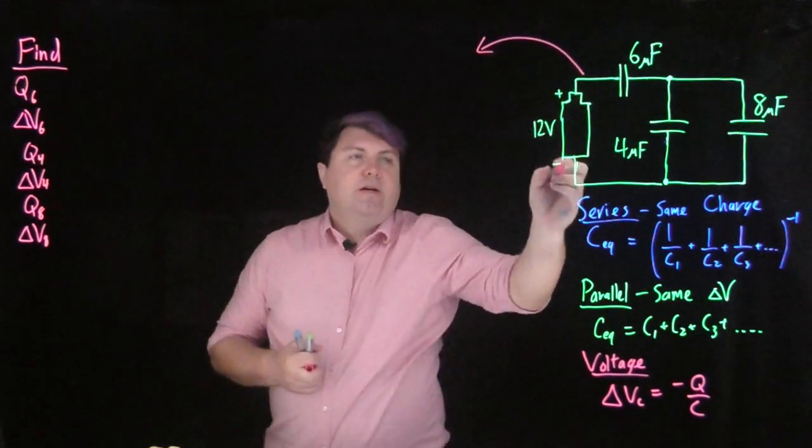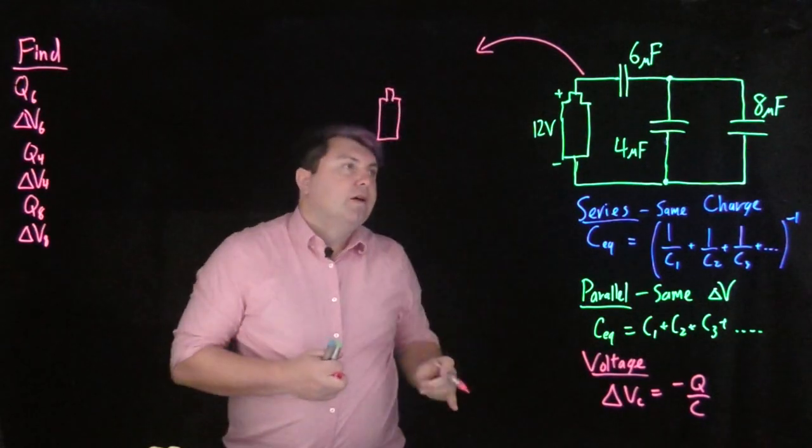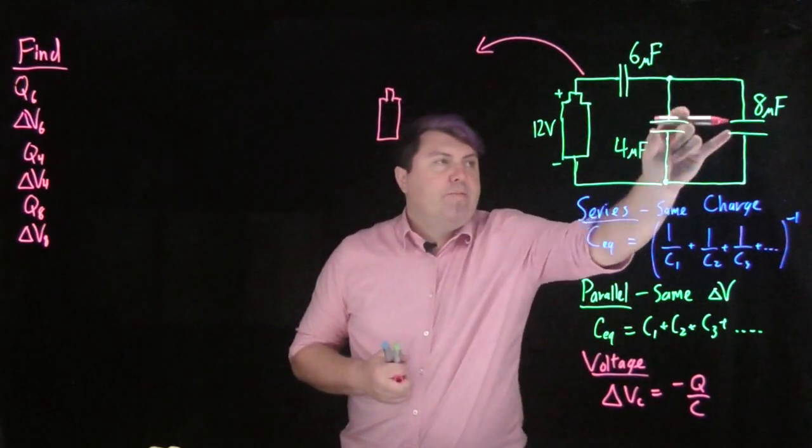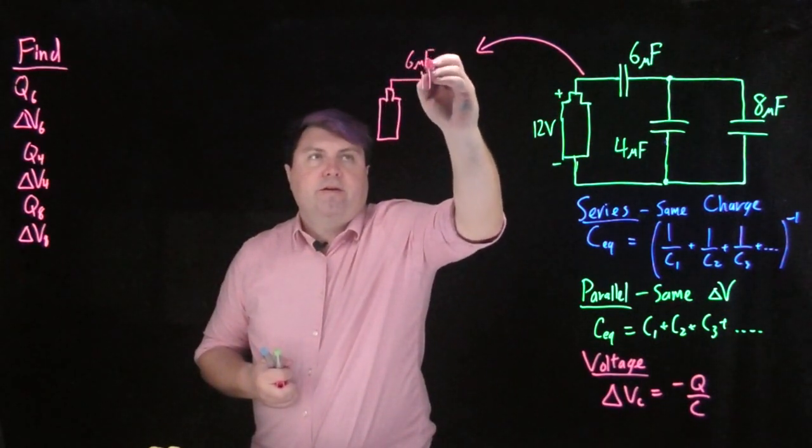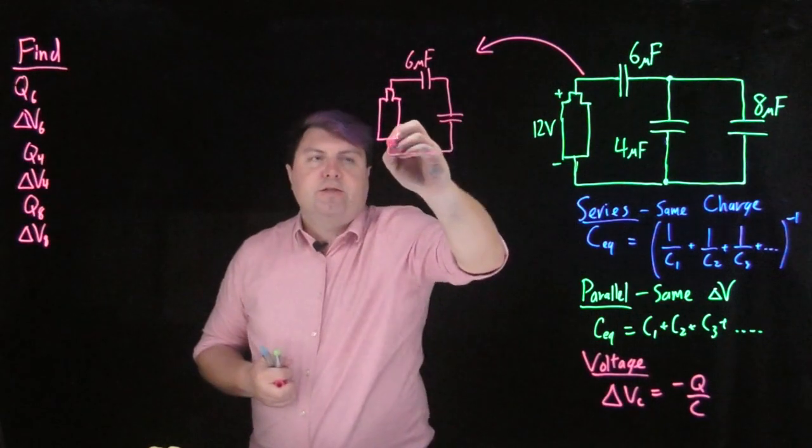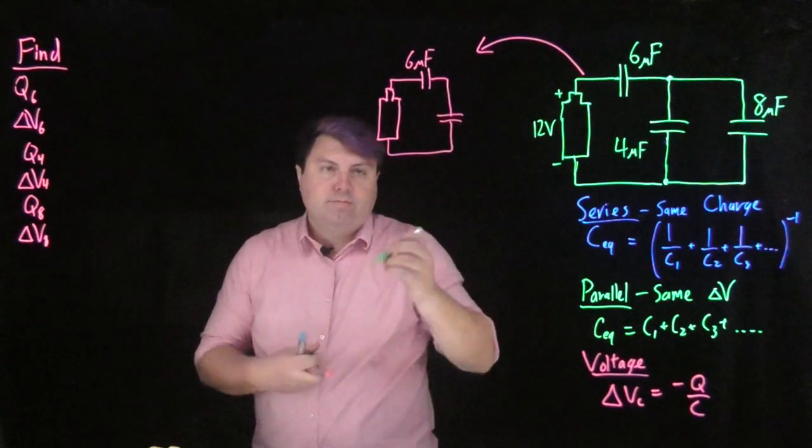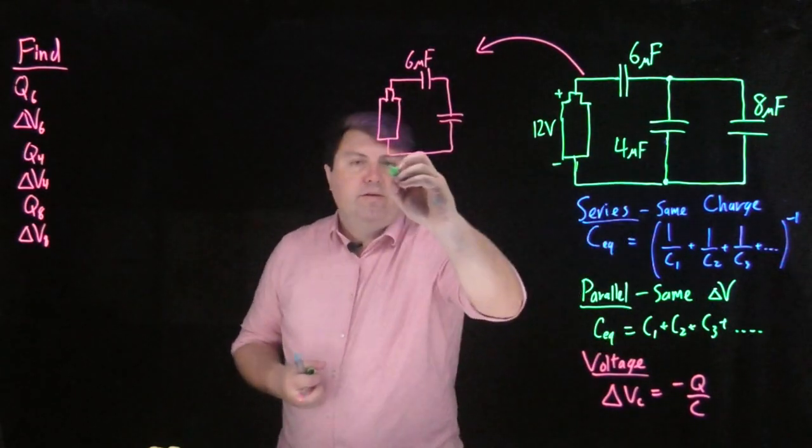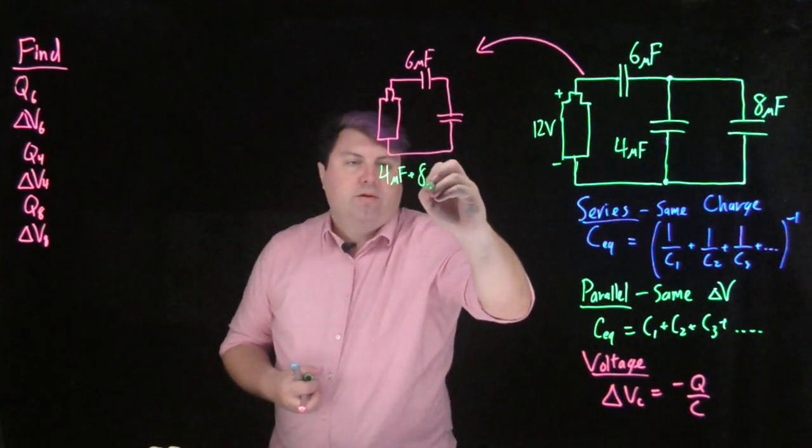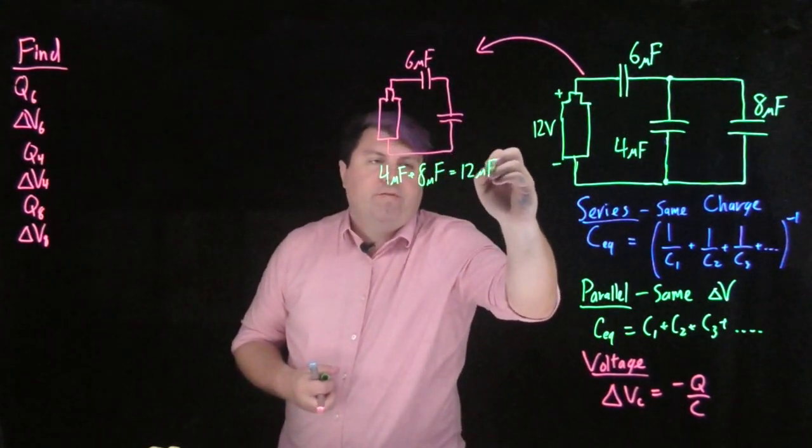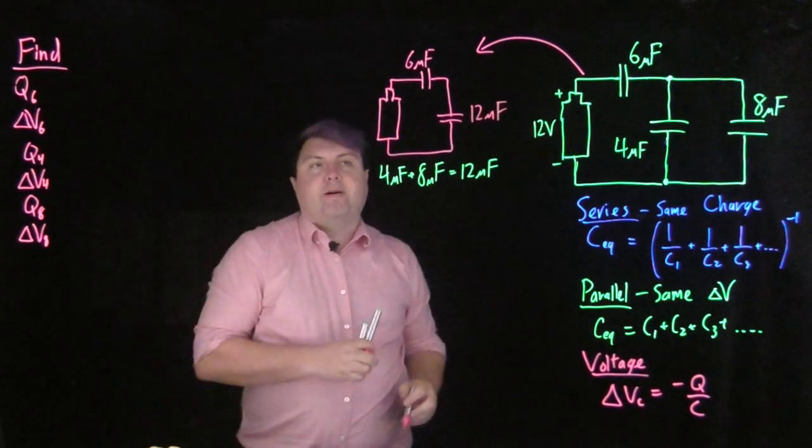So one thing we can do to start is to redraw this circuit as something slightly simpler. We can see that these two capacitors are in parallel, so we can keep our 6 microfarad, but we can rewrite both of them as just a single capacitor. We know that they are in parallel, so we have C1, 4 microfarads, plus C2, 8 microfarads, and that gives me 12 microfarads.